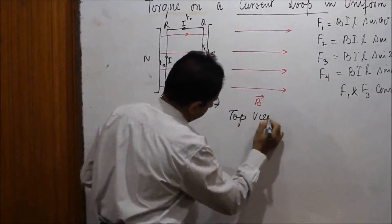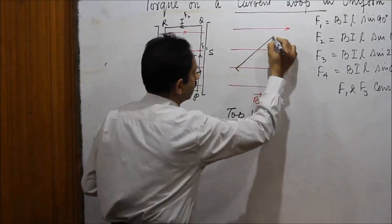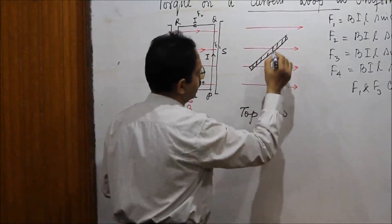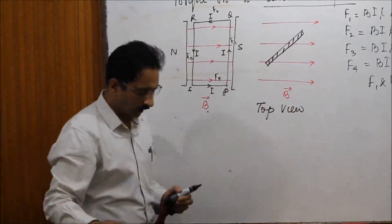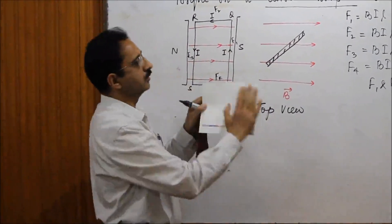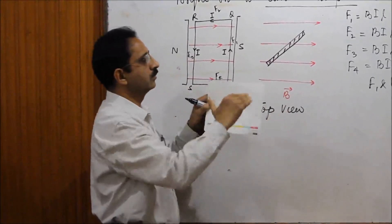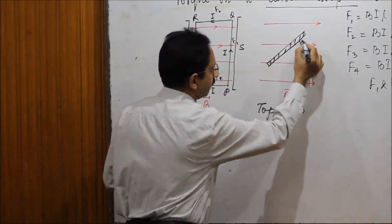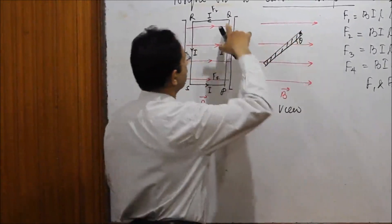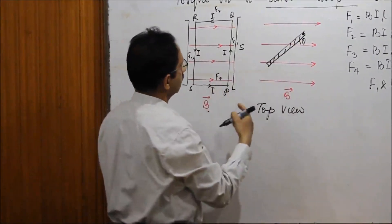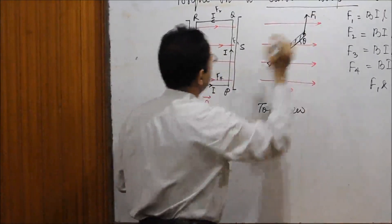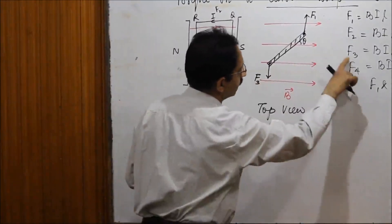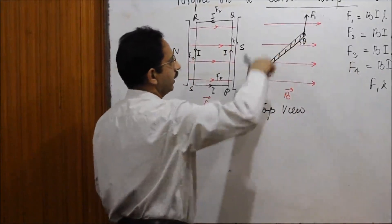Let the angle between the plane of the loop and the magnetic field be θ. We have force F1 acting on conductor PQ and force F3 acting on conductor RS — both equal and opposite. They constitute a torque that tends to rotate the loop. The magnitude of torque is given by one of the forces multiplied by the arm of the couple, which is the perpendicular distance between the lines of action of the two forces.